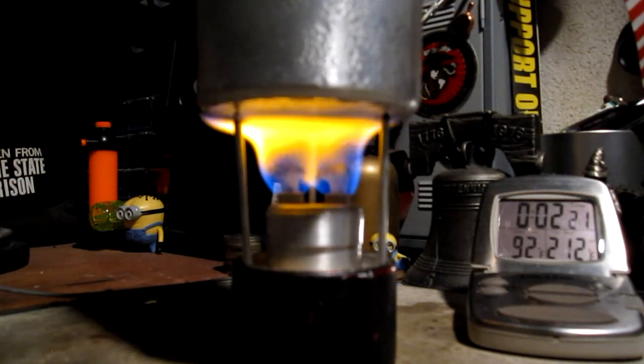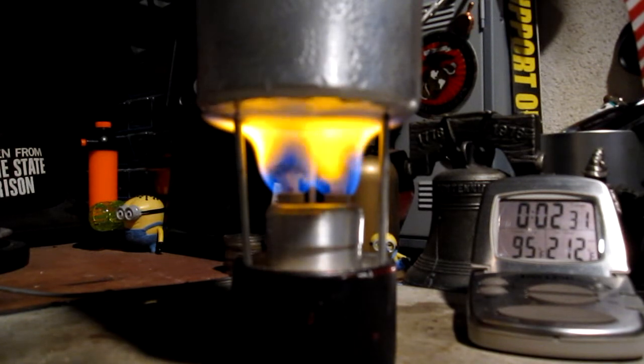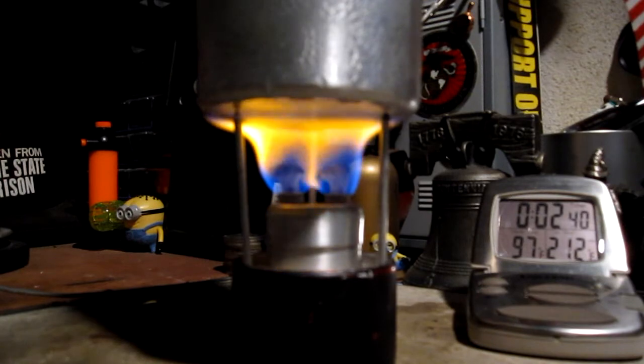This stove is somewhat adjustable. You can move the wicks up and down. These are up fairly high, maybe too high. The room temperature I didn't mention was 79 degrees or 26.11 degrees centigrade, humidity 62, and it's cloudy out. Let's see where it goes from here.